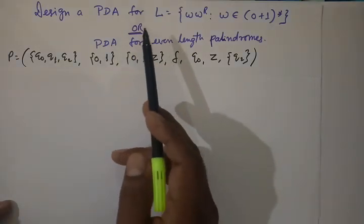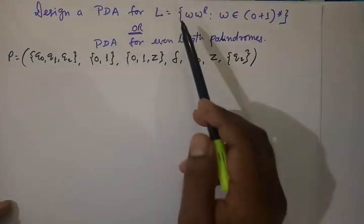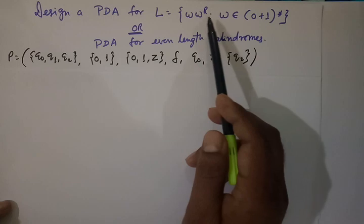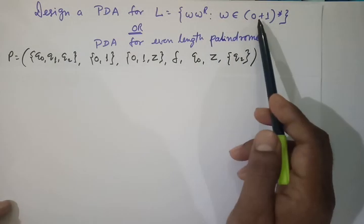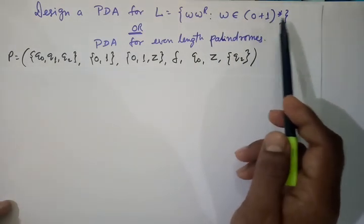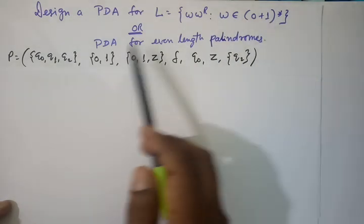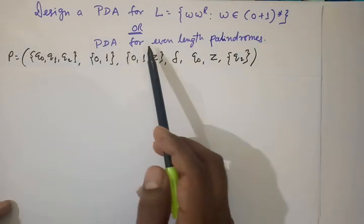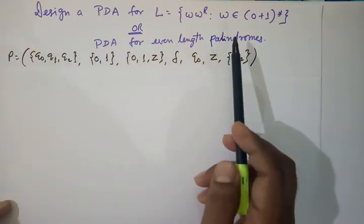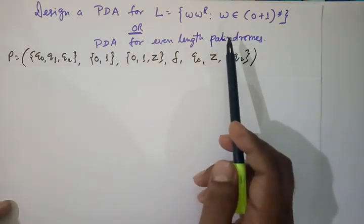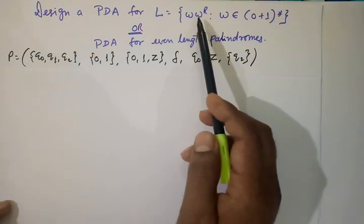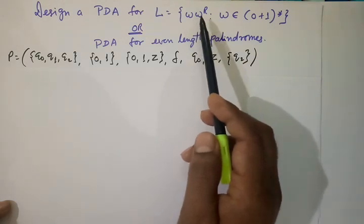In this lecture, we are going to design a pushdown automata for language WW^R, such that W belongs to (0+1)*, or equivalently, pushdown automata for even-length palindromes. All strings of this form are even-length palindromes.